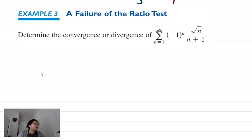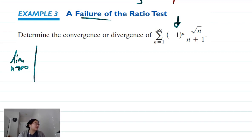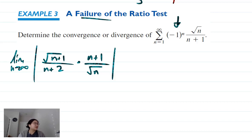This next one is labeled as a failure, so I'm anticipating failing with the ratio test and we'll probably need the alternating series test. The limit as n approaches infinity of the absolute value of √(n+1)/(n+2) times (n+1)/√n — we end up with n to the same power in numerator and denominator, giving us a ratio of leading coefficients equal to 1. So that is inconclusive by the ratio test.